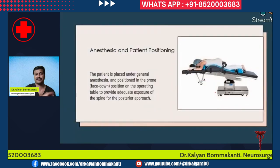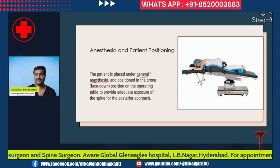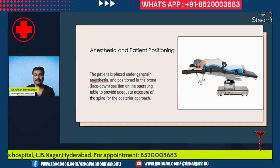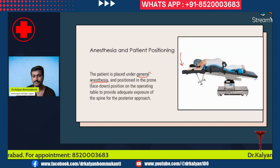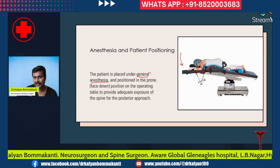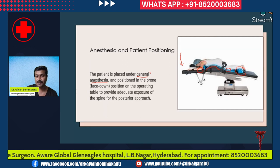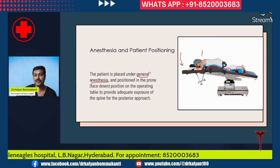We always administer general anesthesia; spinal anesthesia is rarely used except in specific conditions. Because this is a posterior approach — approaching the patient from behind — the patient is placed prone on the operating table. Ensure that all pressure points are properly padded: the knees and heels are padded, the abdomen is well-supported and free due to the frame, the neck is properly positioned above the heart level, and there is no compression on the neck.